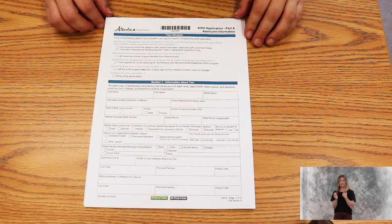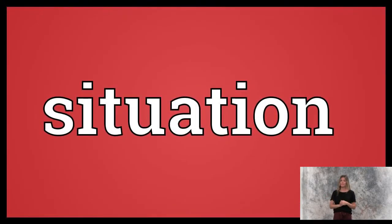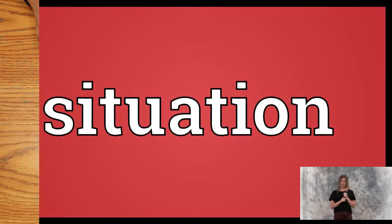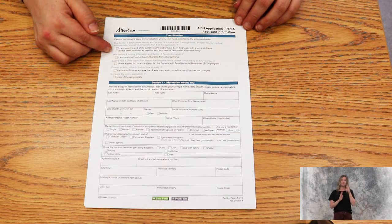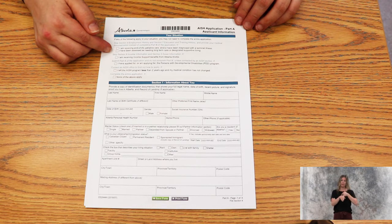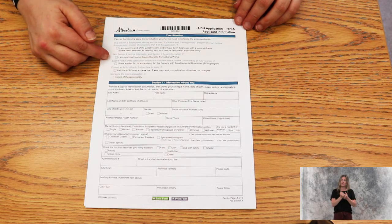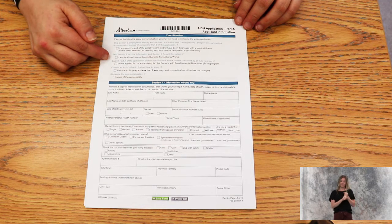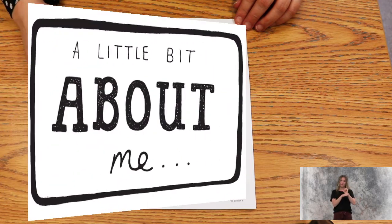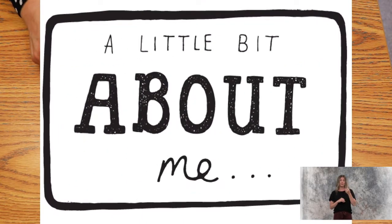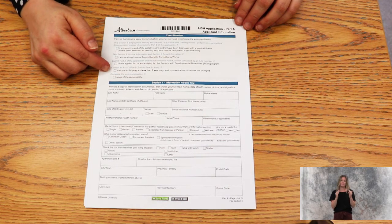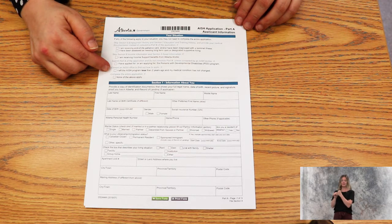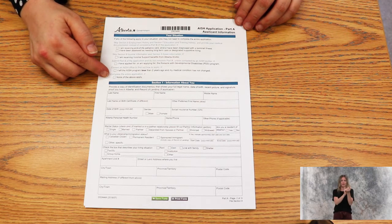On the first page, you will need to figure out your situation: I am receiving end-of-life palliative care or have been diagnosed with terminal illness; I have been assessed as needing long-term care or designated support living; I am receiving income support benefits from Alberta Works; I have applied for or am applying for the Persons with Developmental Disabilities Program; I have left the ACE program less than two years ago and my medical condition has not changed; or none of the above apply.